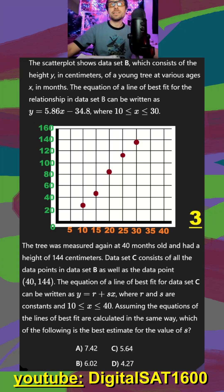We see a scatter plot, and this is data set B, which consists of the height of young trees at various ages in X months. We have the equation of best fit right here, where our X is between 10 and 30.